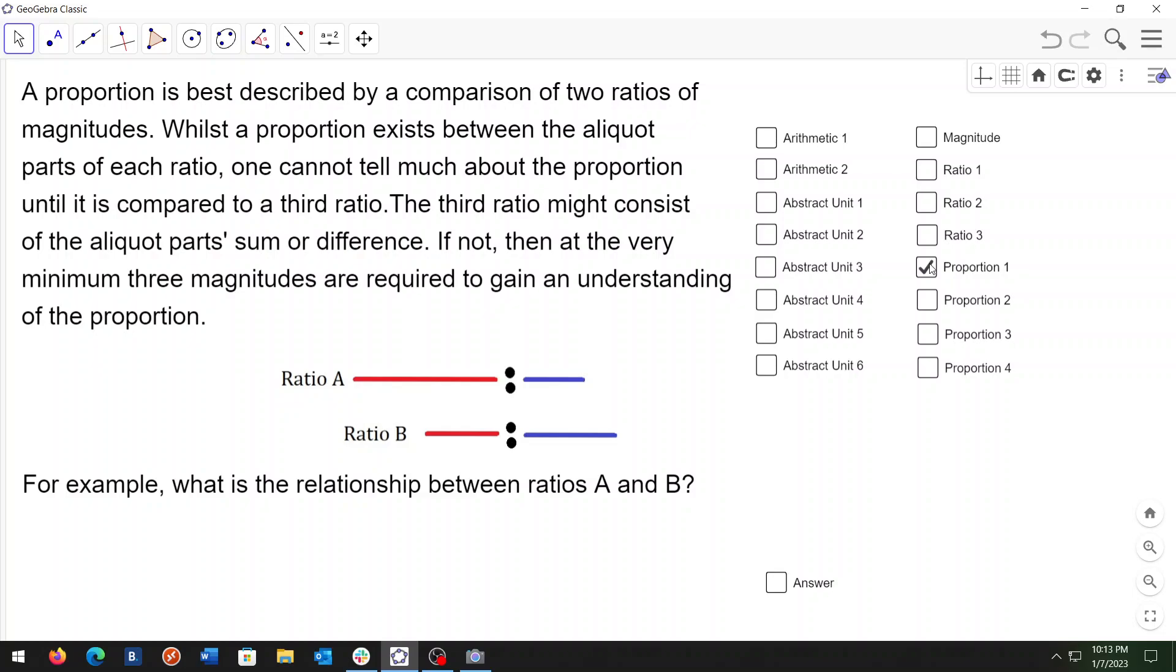A proportion is best described by a comparison of two ratios of magnitudes. Whilst a proportion exists between the aliquot parts of each ratio, one cannot tell much about the proportion until it is compared to a third ratio. The third ratio might consist of the aliquot parts sum or difference. If not, then at the very minimum three magnitudes are required to gain an understanding of the proportion.